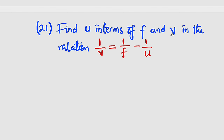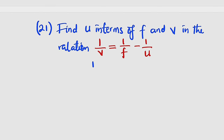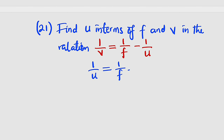Question number 21 reads: find u in terms of f and v in the relation 1/v = 1/f minus 1/u. This is simply saying we should make u the subject. Since this contains u, let us take it to the left hand side as negative 1/u. Crossing over, it becomes positive 1/u, equal to 1/f.